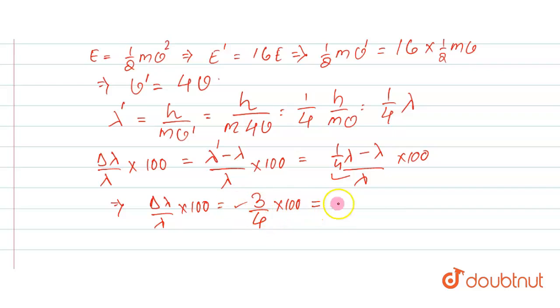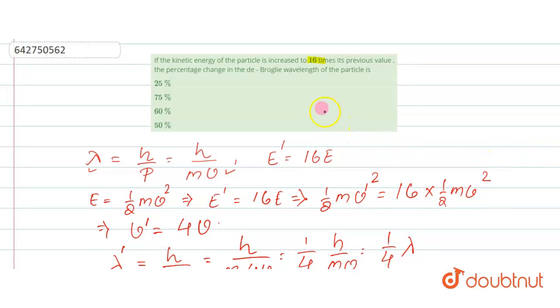So now if you solve this, you will get this will be around 75 percent. So the change in de Broglie wavelength is 75 percent. You can see there is option B which is 75 percent, so that means 75 percent is your answer. I hope this solves your question. Thank you.